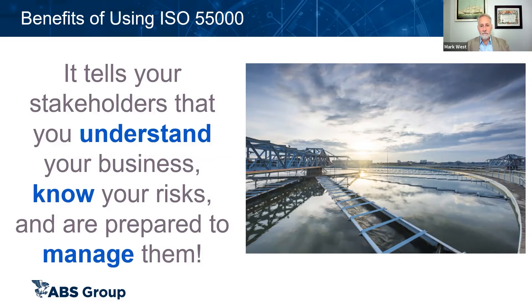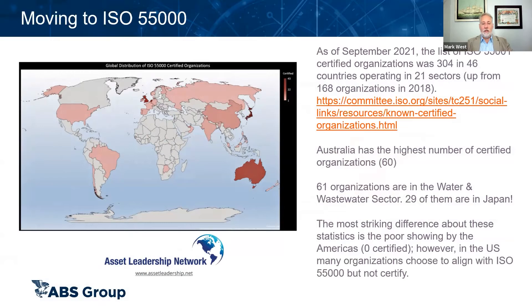Looking at what kinds of organizations are actually certifying to ISO 55000: as of September, there were 304 certified organizations in the world, in 46 countries and 21 different industrial sectors — up from 168 in 2018. Australia has the highest number of certified organizations. Sixty-one organizations were in the water and wastewater sector, with 29 of them in Japan alone. The most striking thing for me is that there were zero certified organizations in the Americas.